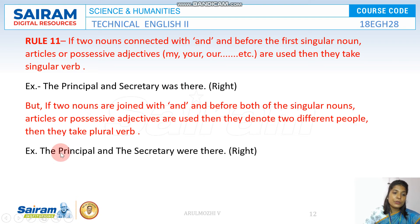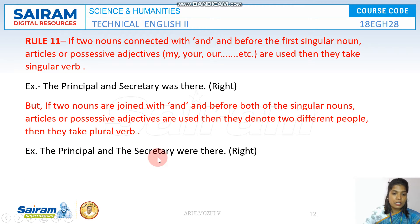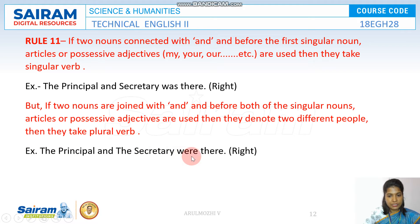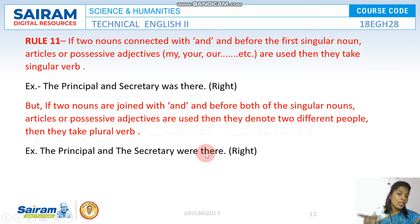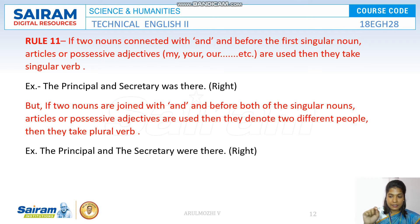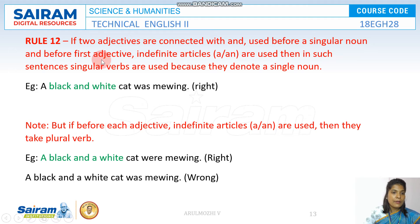But if you use two different articles or two adjectives before each of the nouns, it means two different people. For example: 'The principal and the secretary were there.' 'Your principal and your secretary were there in the meeting' — meaning two separate individuals.